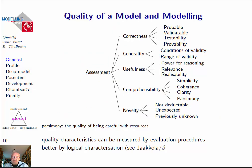Maybe we should think about what properties we really want. For instance, you might go for an assessment of correctness, generality, usefulness, comprehensibility, and novelty. You would have sub-characteristics to describe at what level the model is fit for what it has been assigned to do. These characteristics should be used for assessing the model, the modeling process, and also the utilization process. The classical way in software engineering is to give metrics measuring by numeric value the fitness of an element in a software process, but a better logical characterization is possible for these quality criteria.